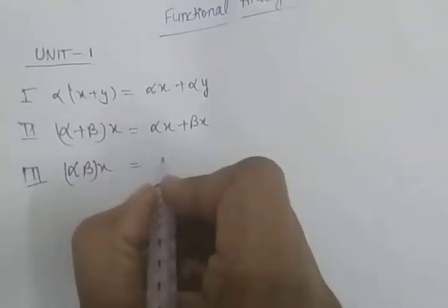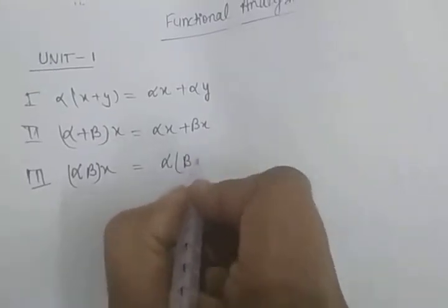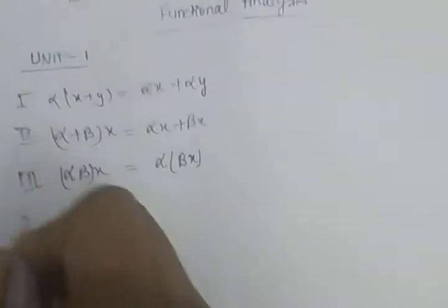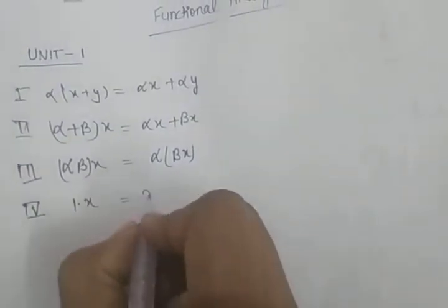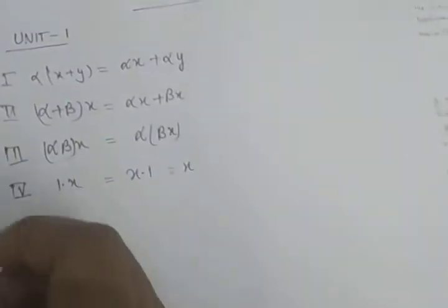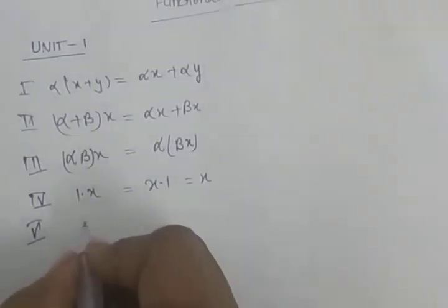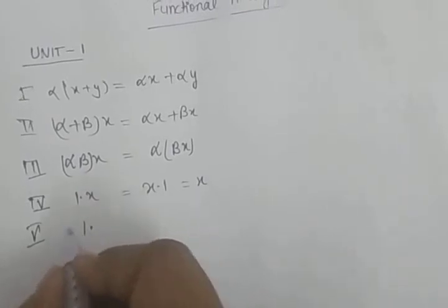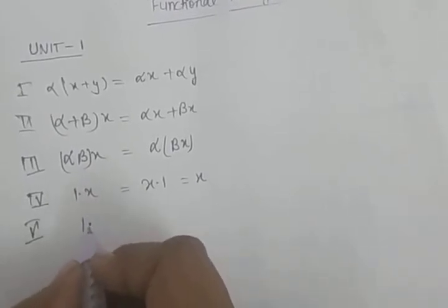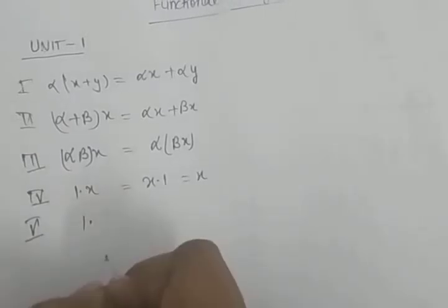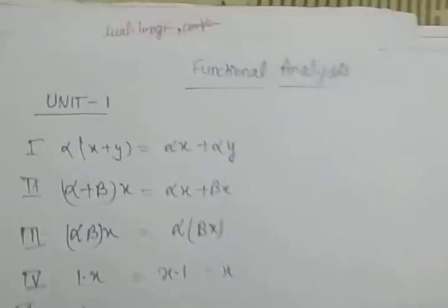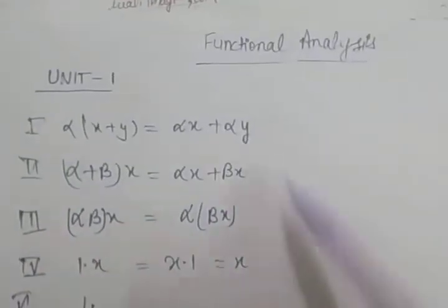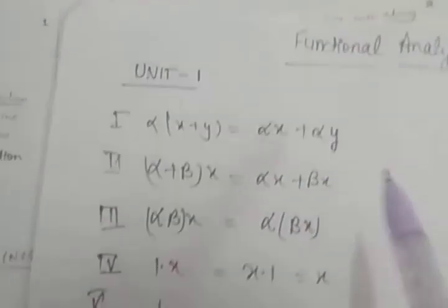Third property — (alpha·beta) into X equals alpha into (beta X). Fourth property — identity 1 into X equals X. Fifth property — if we define the identity element e, then e·X satisfies the same multiplication property. All scalars alpha and beta and vectors X, Y belong to real and complex numbers.